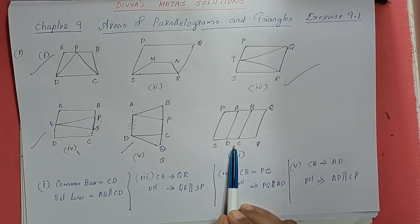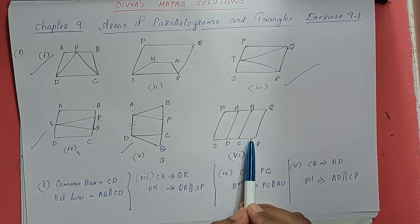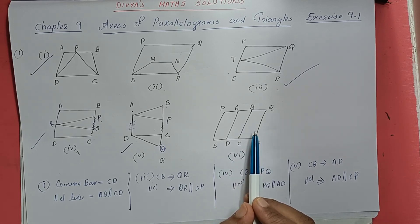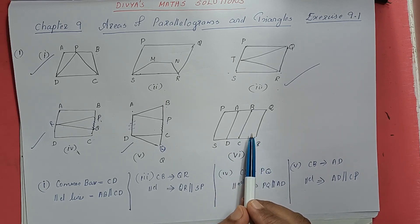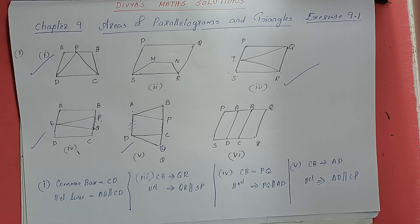Sixth figure: there is no common base; the base is varying for each figure and there are no common parallel lines. So the answer is that figures 1, 3, 4, and 5 have a common base and parallel lines.